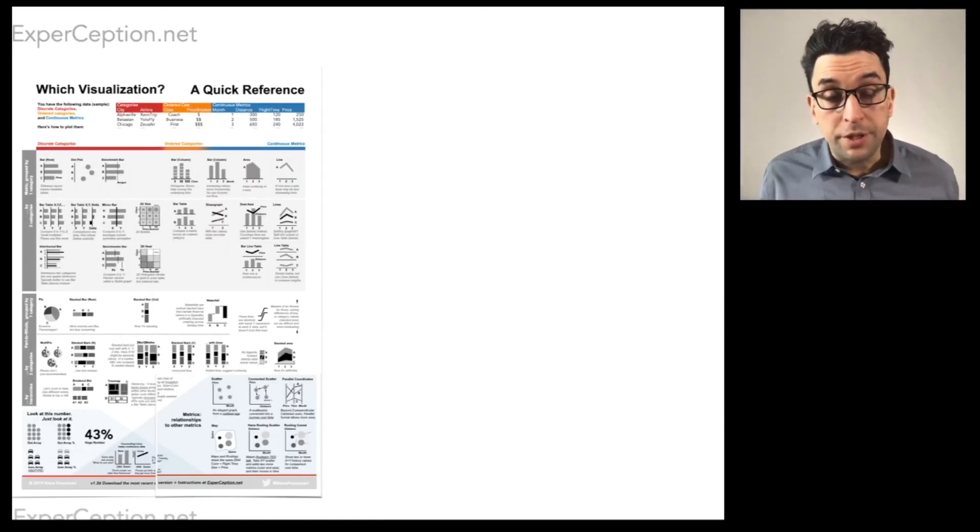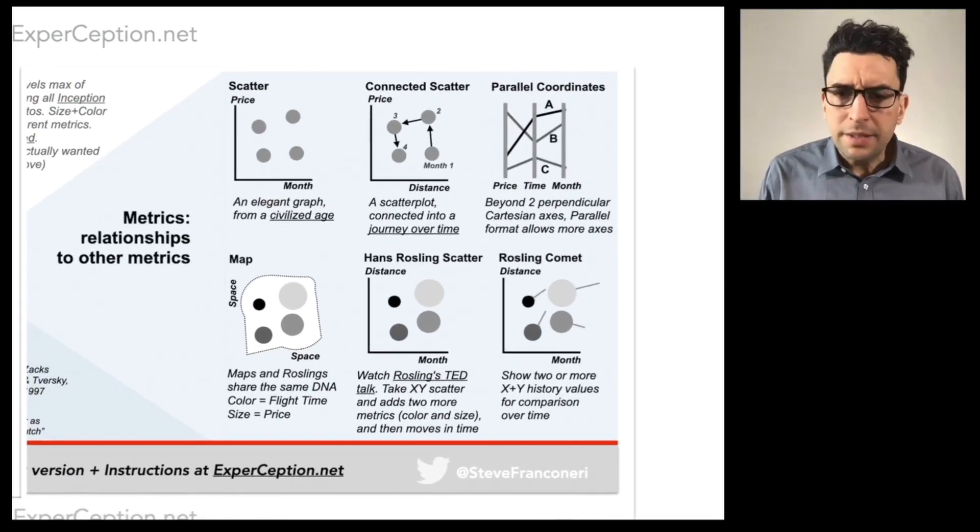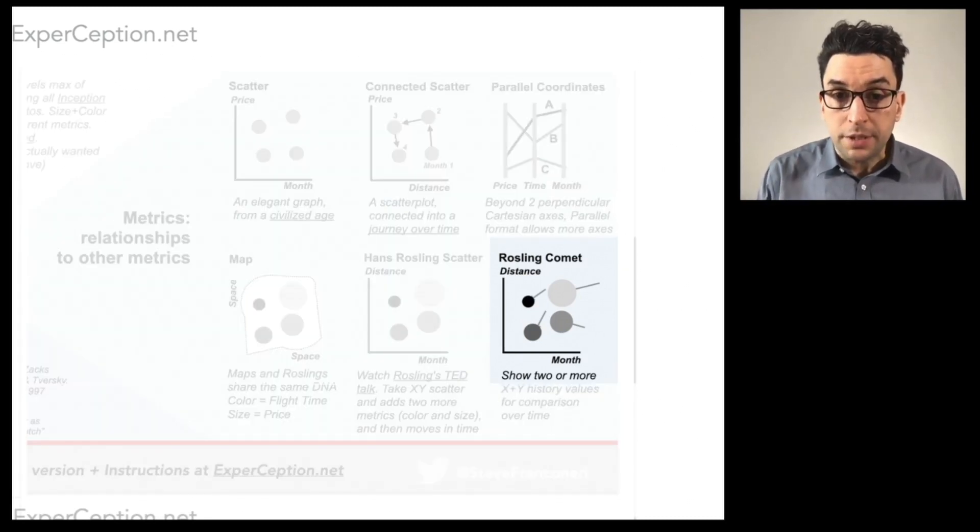If you check out this chart chooser that's available at the link above, and you zoom into the bottom right, these kinds of connected scatter plots and Rosling scatter plots hold a special place in our taxonomy of ways to show complex data sets. Data sets where you have two to four metrics that you want to get across to an observer's eyes, they hold a special place on the bottom right.